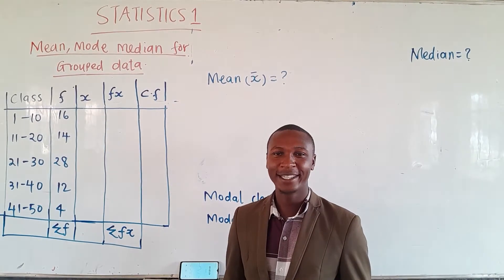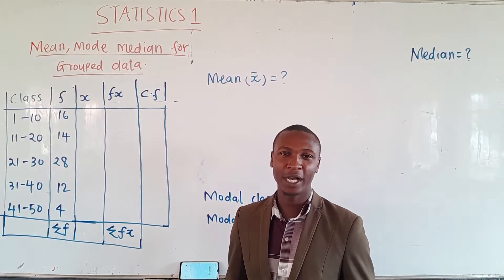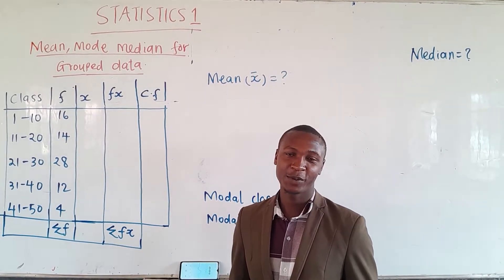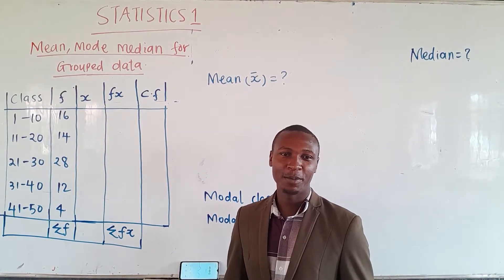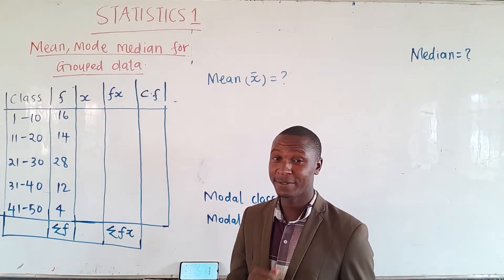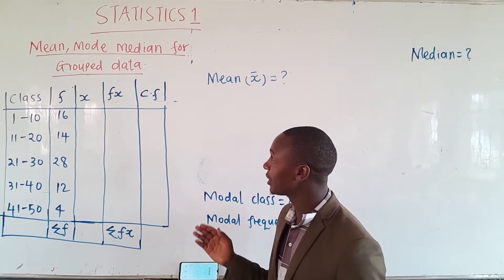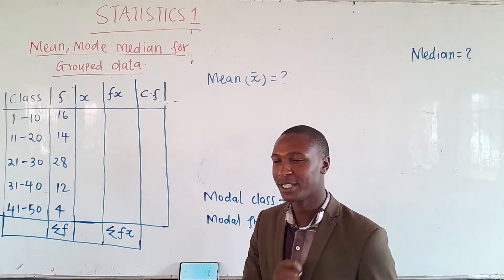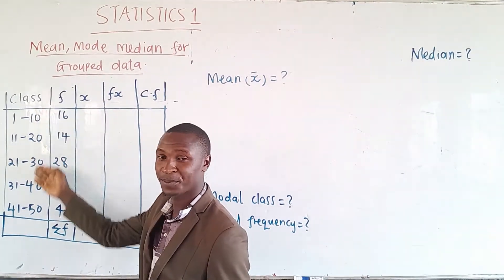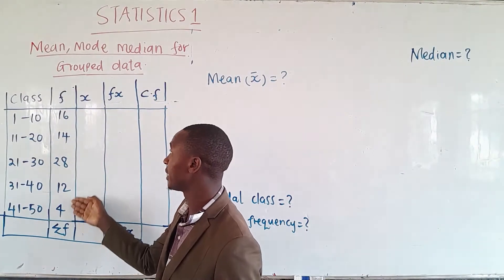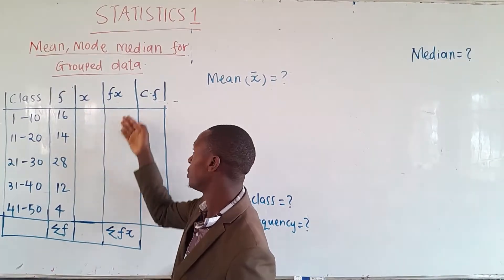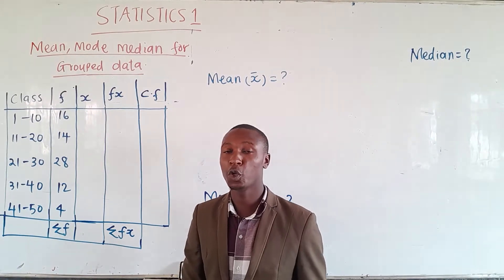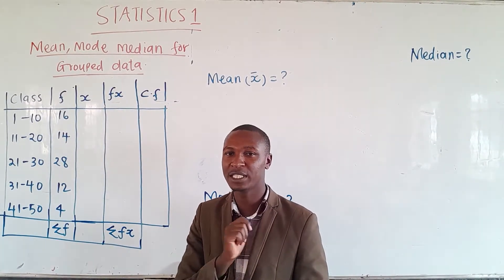Welcome. In this video, here is our first example on how to work out the mean for grouped data. We're going to work out the mean, median, and mode for a given set of data. We have a table which we are supposed to use to analyze. Note that in this data we have classes, a column for frequency, a column for x, a column for fx, and a column for cumulative frequency.